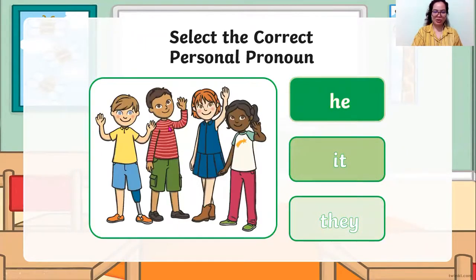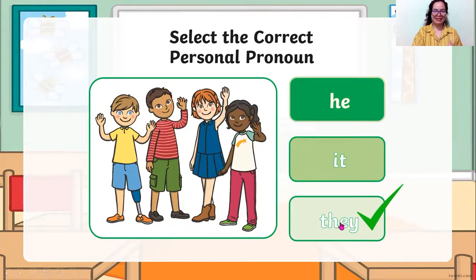This one — a group of people, but you are not including yourself. So we are going to use the personal pronoun they, because they are a group of people and you do not belong with this group.